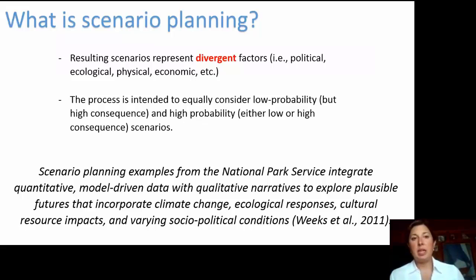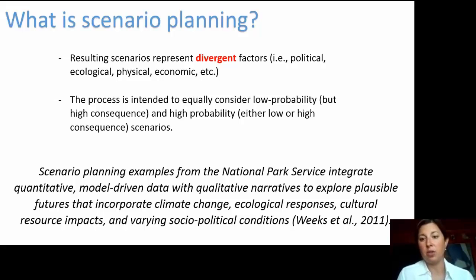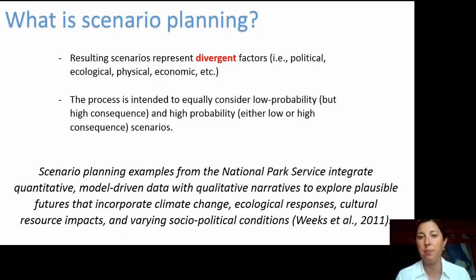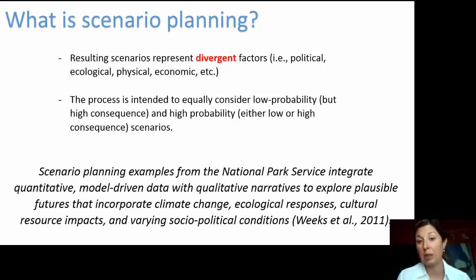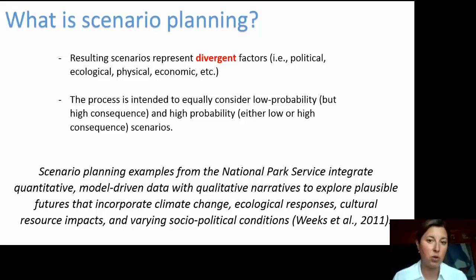The result is divergent scenarios. When you choose the drivers — which could be political, ecological, physical, economic, or other — you look at the two extremes of a specific driver. For example, if you choose precipitation, you examine what happens with very low precipitation versus very high precipitation. The process equally considers low probability, high consequence events and high probability events of varying consequence. For instance, a prediction that strong hurricanes might increase could be low probability, but if it occurred, the consequence would be very high.